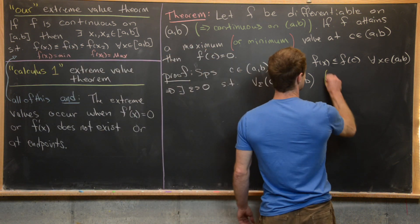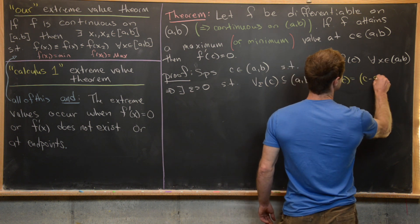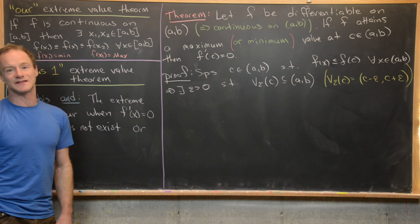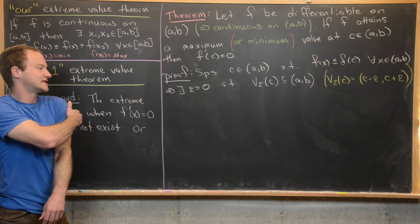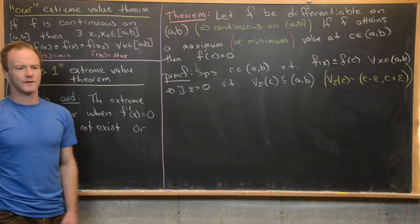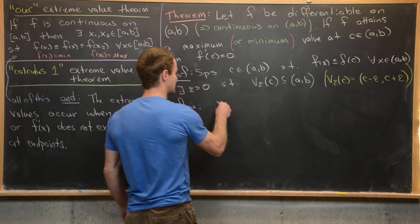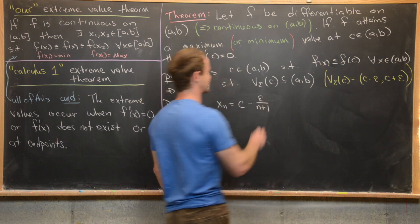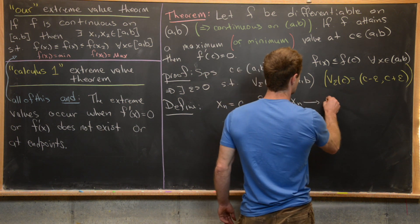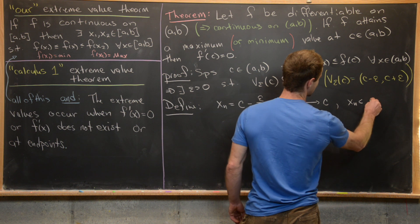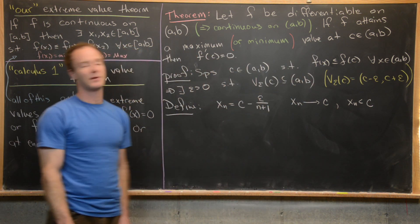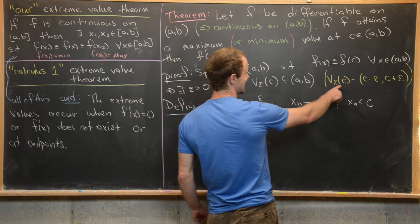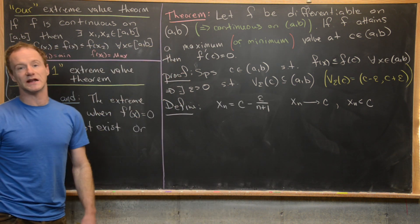As a reminder, this epsilon neighborhood V_ε(c) equals the open interval (c − ε, c + ε). Now I want to define two sequences: one that converges to c from below and one from above. Let x_n = c − ε/(n+1). Notice that x_n converges to c, all values of x_n are less than c since we're subtracting a positive number that gets smaller and smaller. Furthermore, x_n is in the epsilon neighborhood and thus in the open interval (a, b).